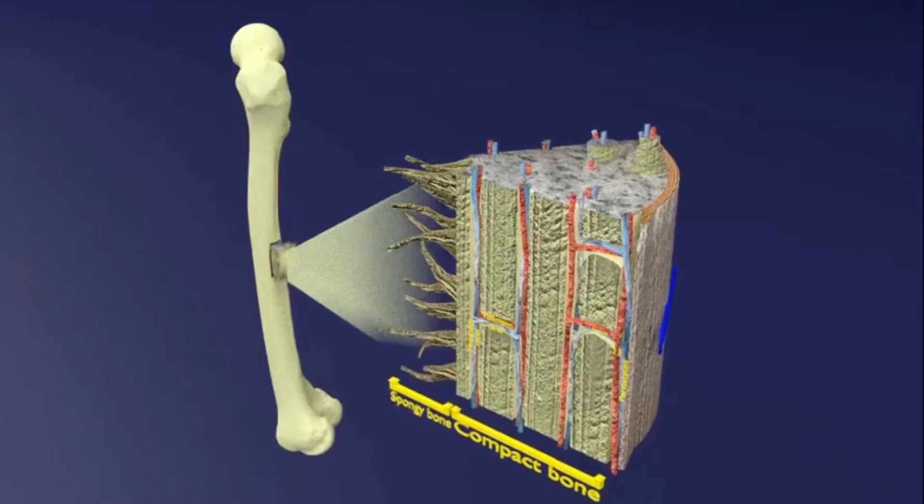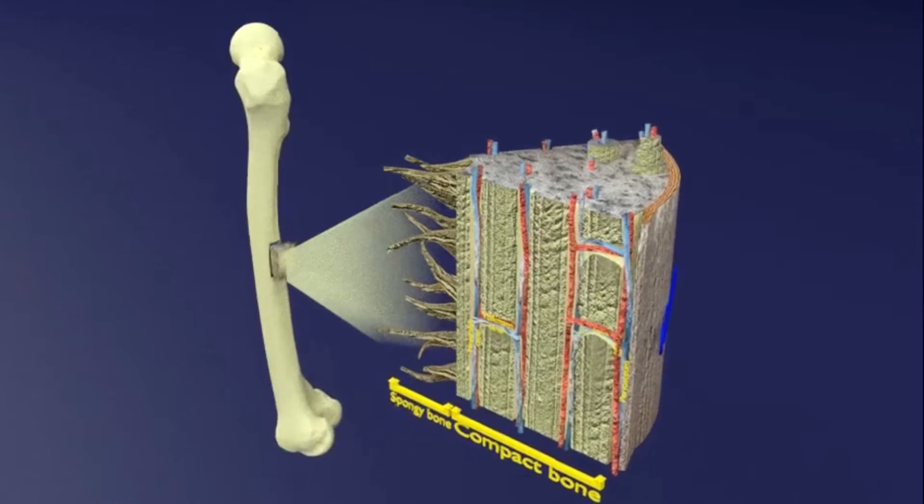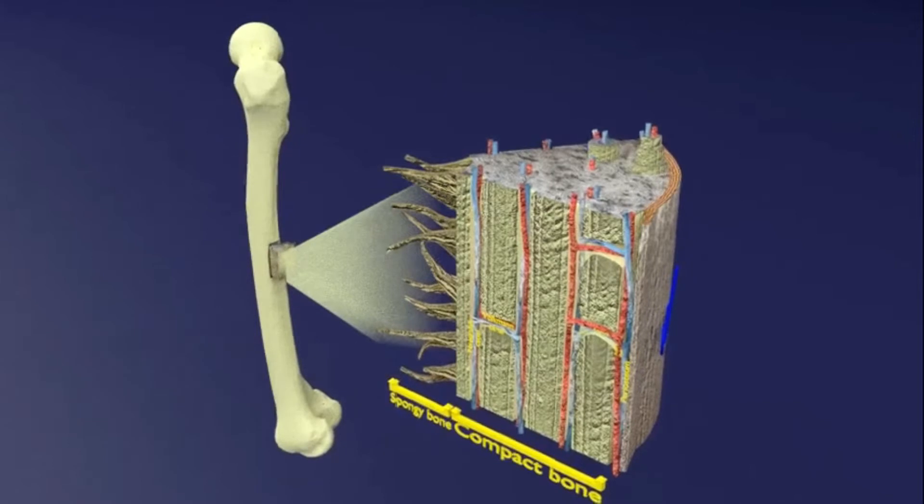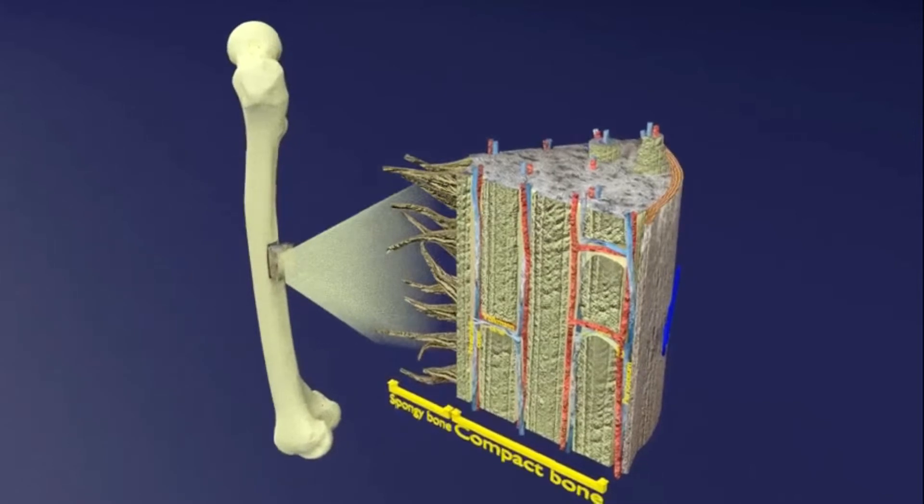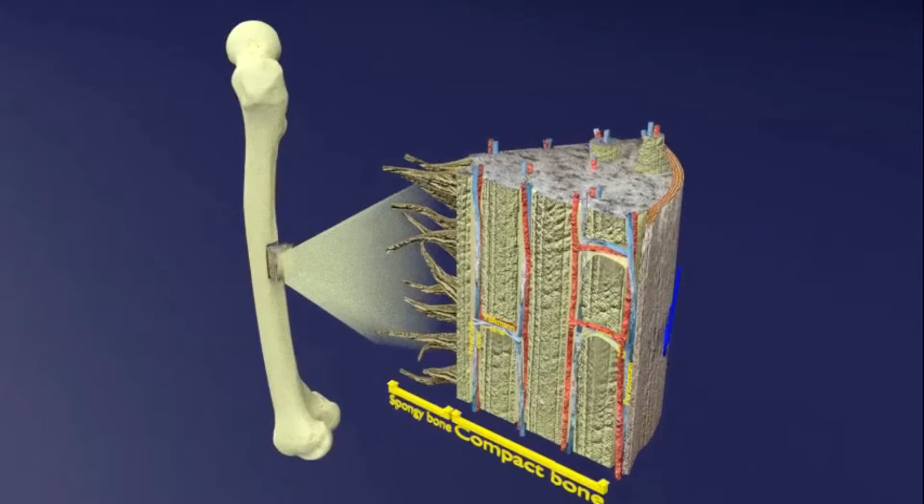Namely long bones, short bones, irregular bones, flat bones, and lastly the sesamoid bones.